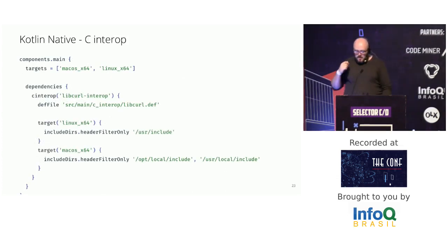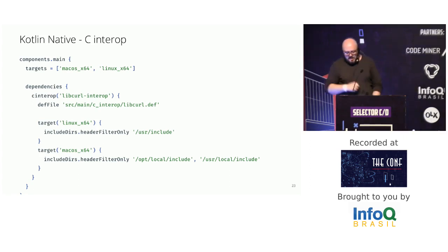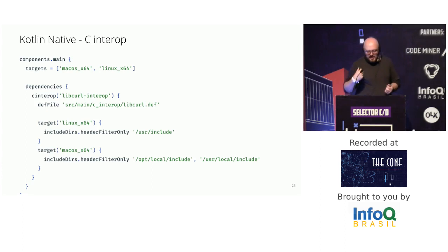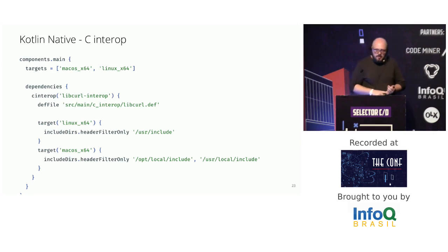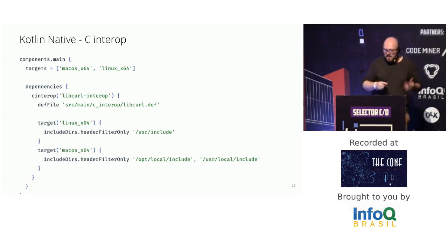This snippet shows how to configure the C interop tool to map existing code for use inside Kotlin. The script uses the Kotlin/Native Gradle plugin and its DSL to set up the necessary steps. Basically, we point to a definition file describing the library — in this case, curl — and it's also possible to set up different configurations for different targets like macOS and Linux.